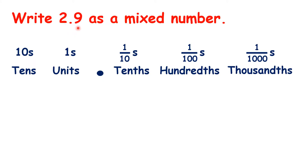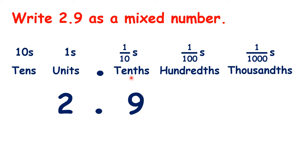How can we write 2.9 as a mixed number? Using our decimal place value chart, we can see that with 2.9 we have 2 units, and then remember the first digit after the decimal point is the tenths digit, so we have 9 tenths. So, as a mixed number, 2.9 can be written as 2 and 9 tenths.